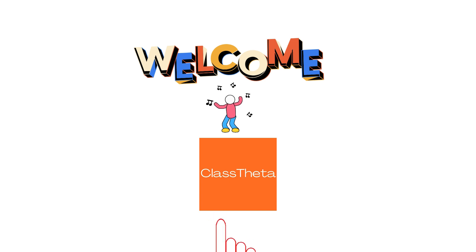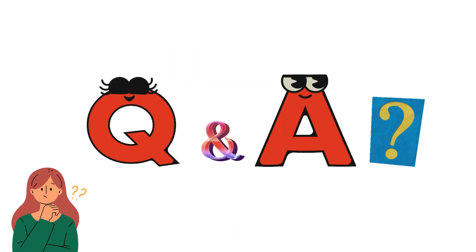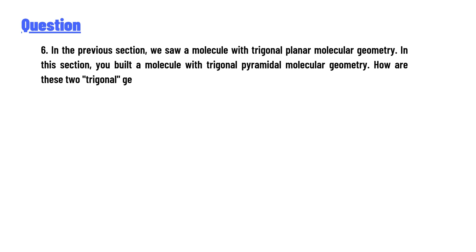So I welcome you on class theta.com. Our today's question is: In the previous section we saw a molecule with trigonal planar molecular geometry. In this section you built a molecule with trigonal pyramidal molecular geometry. How are these two trigonals different?